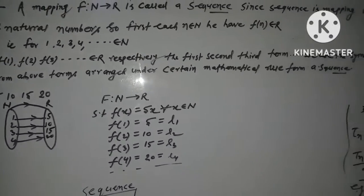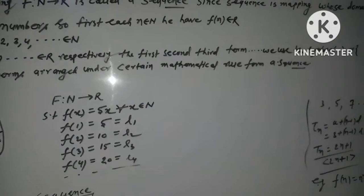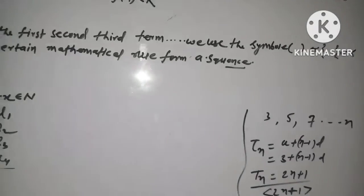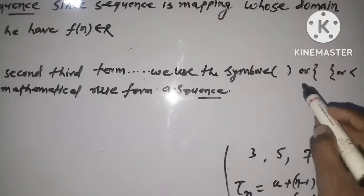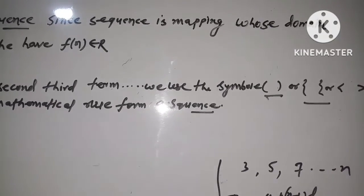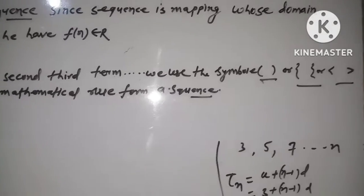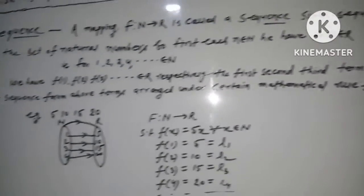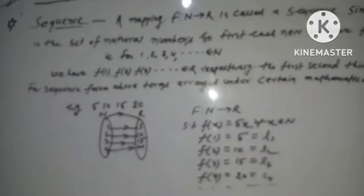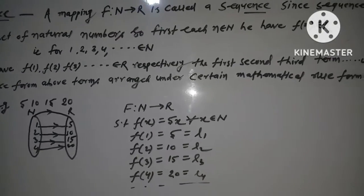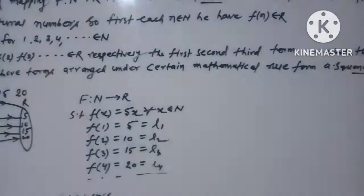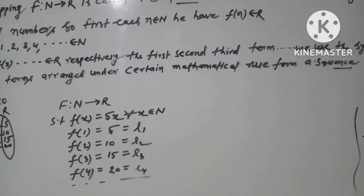So effectively the first, second, third term, we use the symbol bracket, body bracket or less than greater than bracket for sequence. Terms above arranged under certain mathematical use, rule for a sequence.